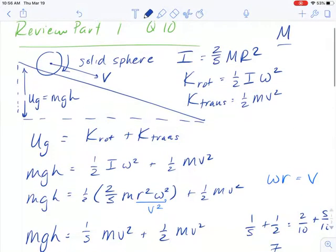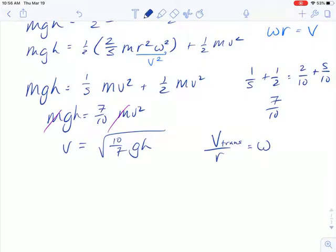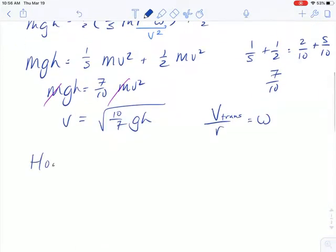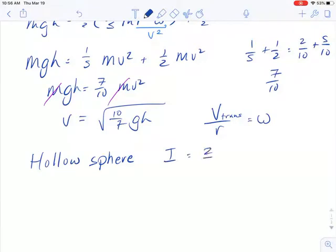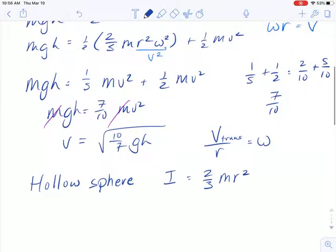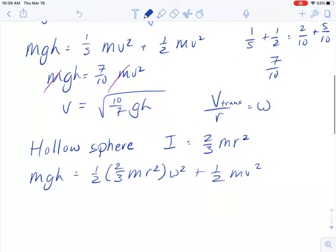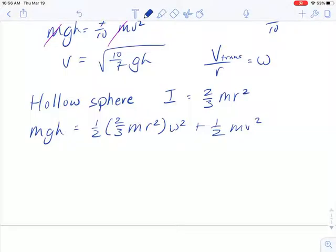Okay, so now, what happens if we repeat the same problem with a hollow sphere? A hollow sphere has a moment of inertia of two-thirds MR squared. So I would have the same kind of thing. I would have MGH equals one-half, instead of two-fifths I'd have two-thirds MR squared omega squared plus one-half MV squared. And now I would simplify the one-half and the two-thirds to one-third.